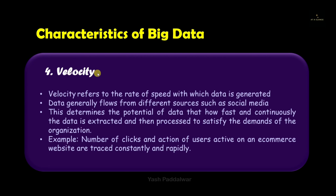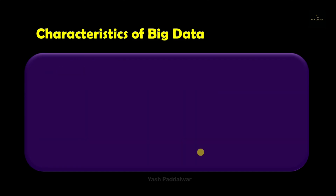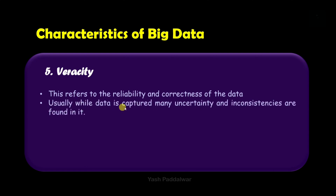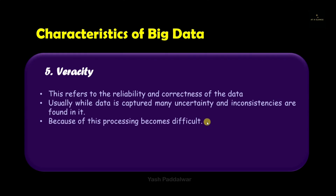The processing speed of user actions is so rapid that it is done in milliseconds, through which the company makes much better decisions and ultimately grows. The last characteristic is Veracity, which refers to the reliability and correctness of the data. Even if data is huge and of good quality, if it is not reliable or correct it will create a lot of chaos. While data is captured, many uncertainties and inconsistencies are found which make data incorrect and unreliable, making data processing very difficult.